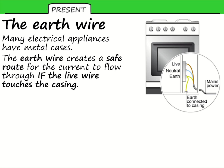The earth wire provides a safe route for current to flow. For example: imagine the live wire inside breaks off — the live wire is always dangerous, even when your switches are off. If that live wire touches the metal case of your cooker, current is going to flow through the cooker and potentially electrocute you. But if we have an earth wire attached to that metal case, instead of traveling out of the case and through you, that current can be channeled safely to ground.